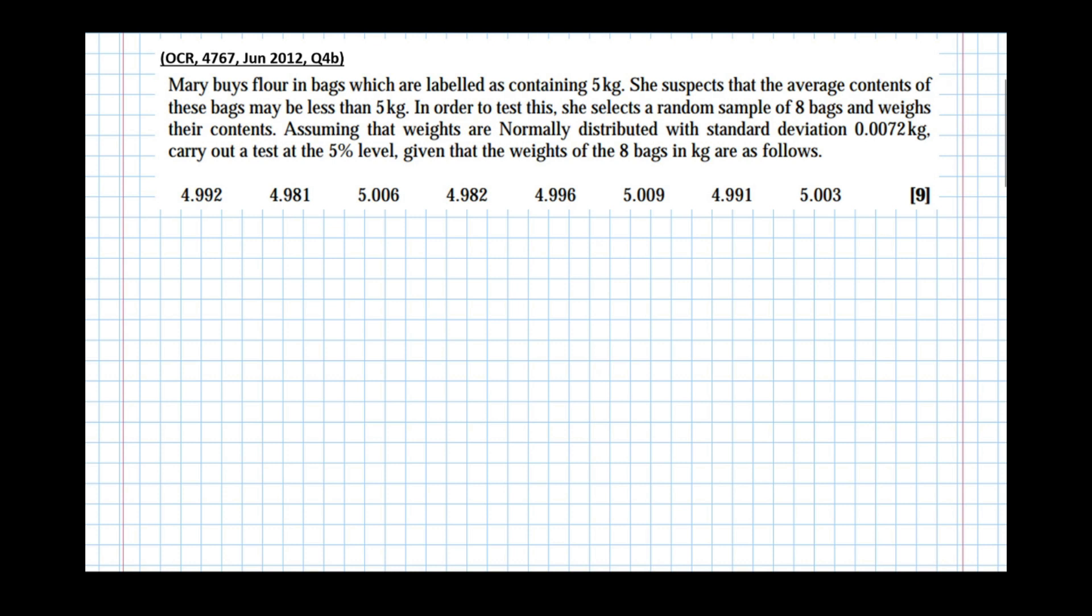So the first thing we should do is define in words the parameter that we're testing. Here we're testing the mean of the normal distribution. The letter we use is μ. So μ, in words, is the mean weight of the population of bags of flour. That word population is quite important, because we're taking a small sample to try and deduce features of the population.